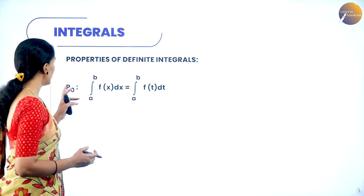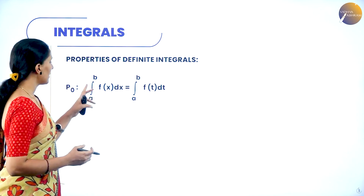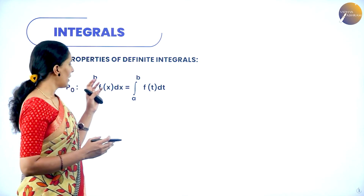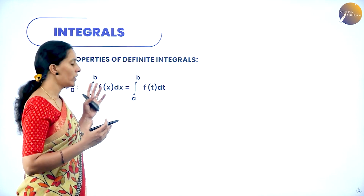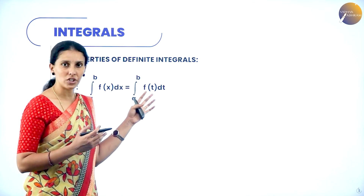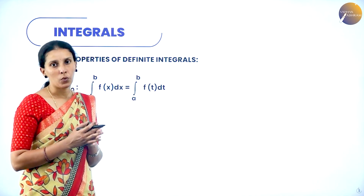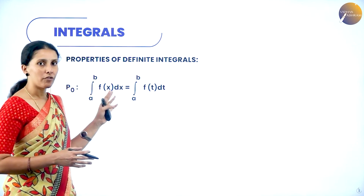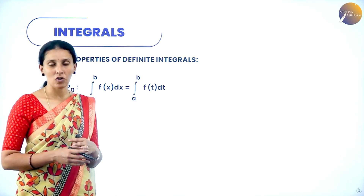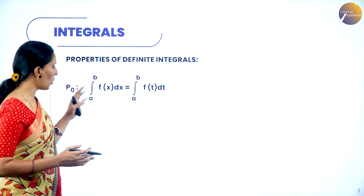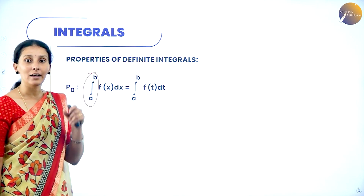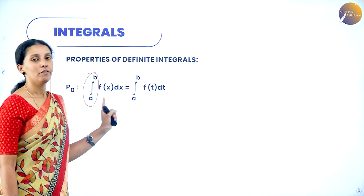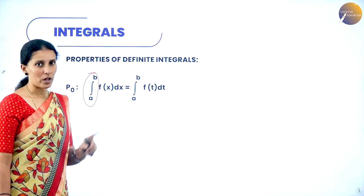The first property is denoted as P0, and it says integral from a to b f of x dx is equal to integral from a to b f of t dt. Here you are integrating with respect to x, and there with respect to t. The independent variable need not always be x — it can be t or y. The only things that matter are the limits and the integrand function, not the variable. So even when you change the variable of integration, the value does not change; they are one and the same.